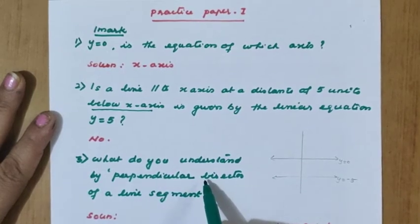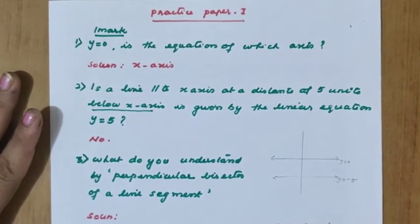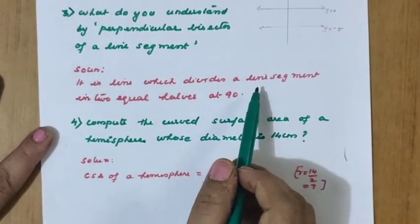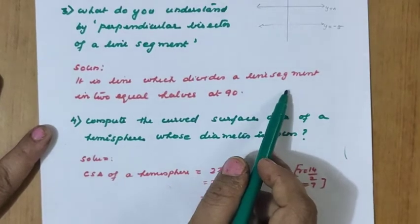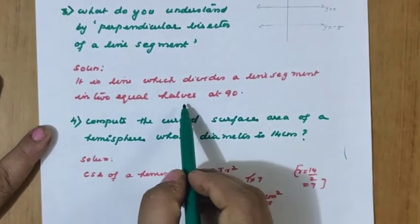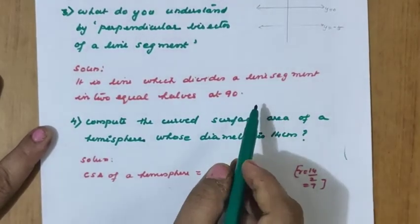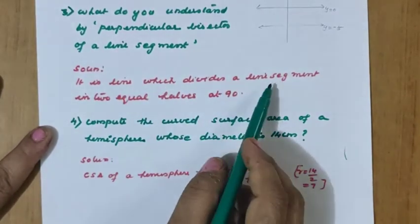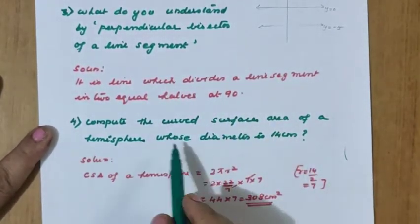What do you understand by perpendicular bisector of a line segment? Perpendicular bisector of a line segment means it is a line which divides the line segment into equal halves and also making 90 degrees with the line. So it is a line which divides the line segment into two equal halves at 90 degrees.